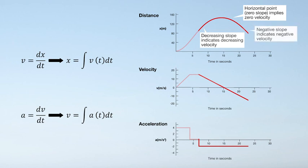The negative slope for displacement beyond fifteen seconds means that there is a negative velocity, and a negative velocity slope implies there is a negative acceleration.